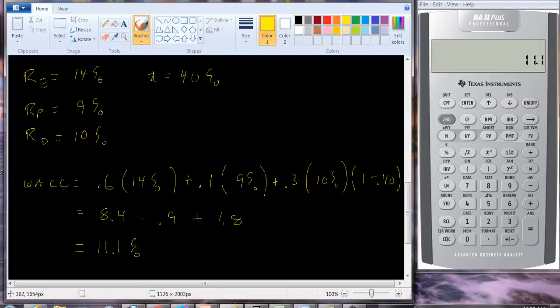So our required return is 11.1%. That's how much the firm has to earn in order to be able to satisfy the people that provided the funding for the firm. Common stockholders are equity, preferred stockholders, and debt holders.